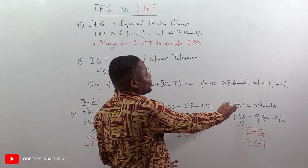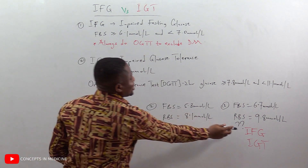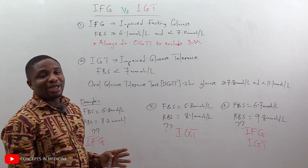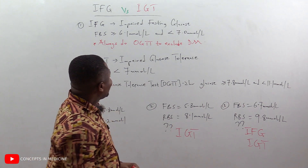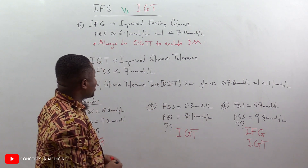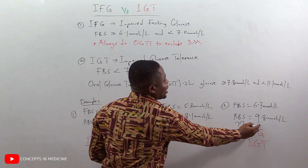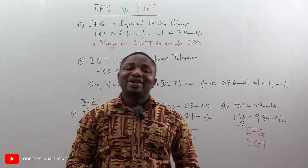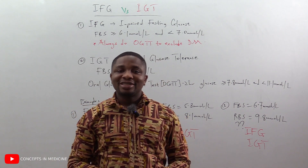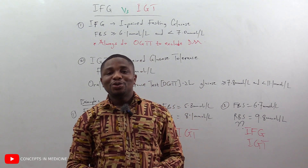The fasting blood sugar is 6.7 mmol/L, which falls within the criteria for impaired fasting glucose. For impaired glucose tolerance, the fasting blood sugar must be less than 7.0 — yes, 6.7 satisfies that. The random blood sugar must be greater than or equal to 7.8 and less than 11.1 — our value of 9.8 falls within that range. Therefore the answer is both impaired fasting glucose and impaired glucose tolerance.